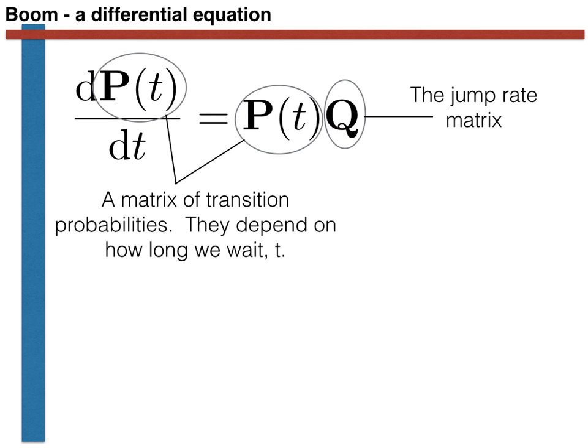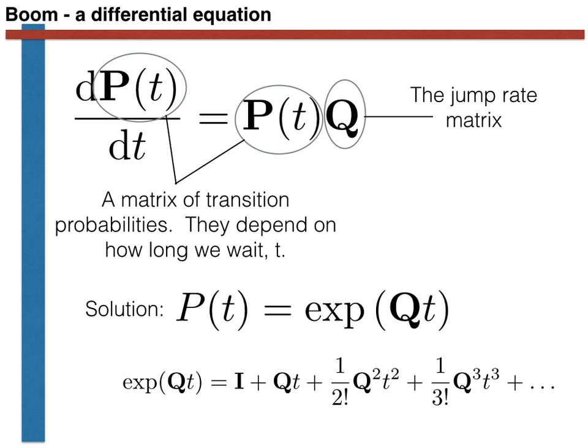Now imagine that this differential equation did not involve matrices that instead P of T was some scalar valued function and Q was just some scalar constant. You hopefully all would know that the solution of this differential equation was the exponential of the constant Q multiplied by T. Now here is something to blow your minds. The solution of this differential equation involving matrices is the same. It is P of T equals the exponential of Q multiplied by T.